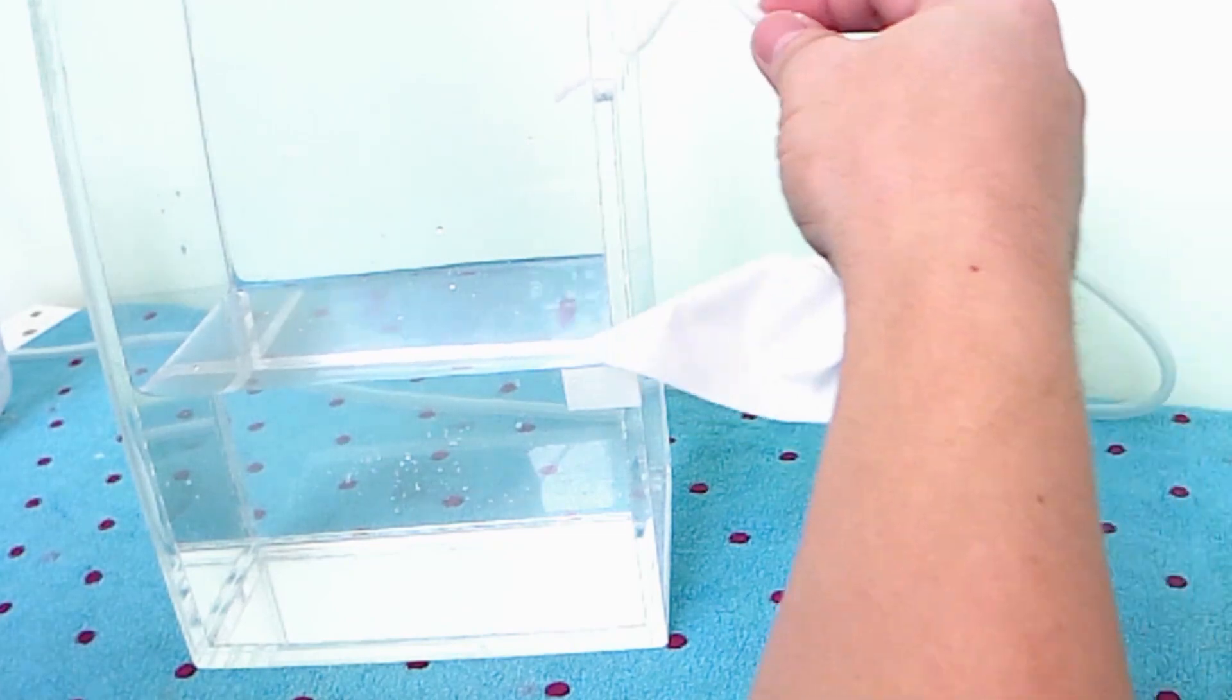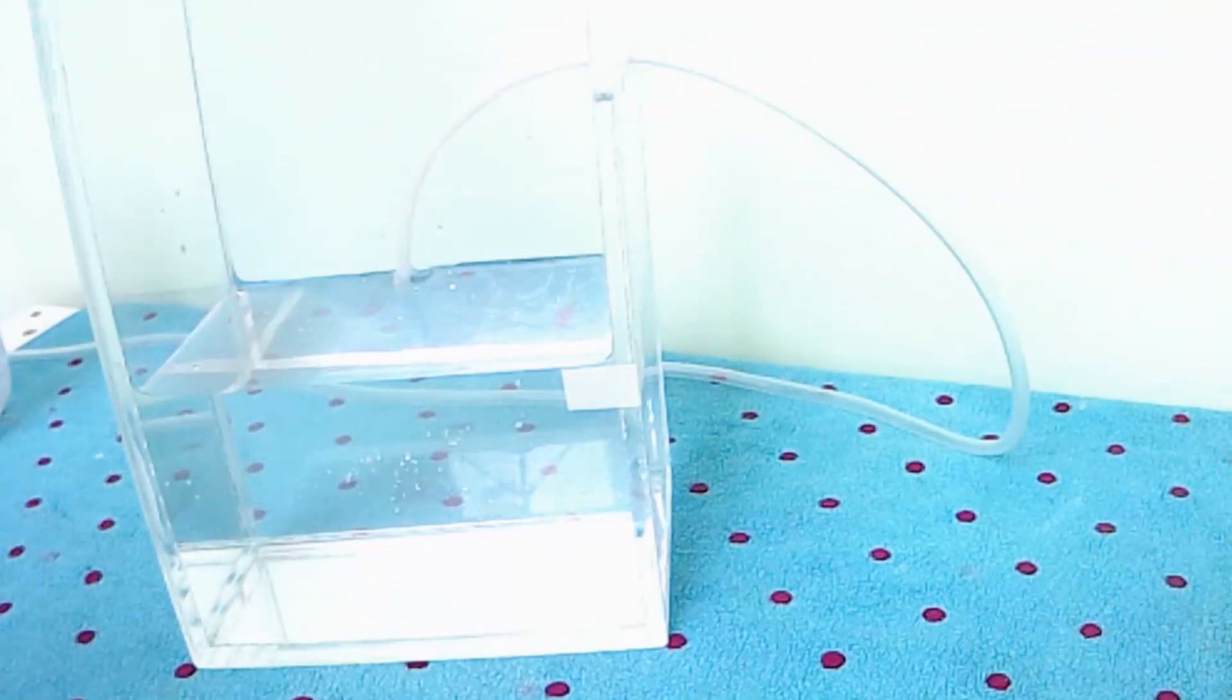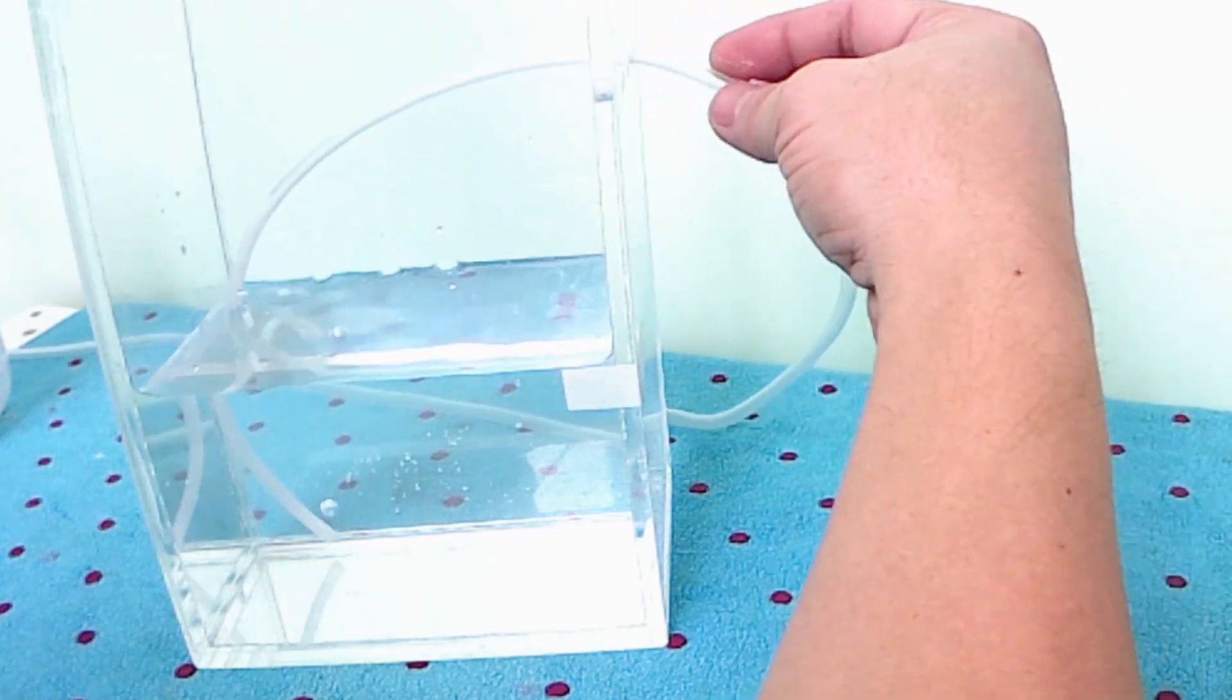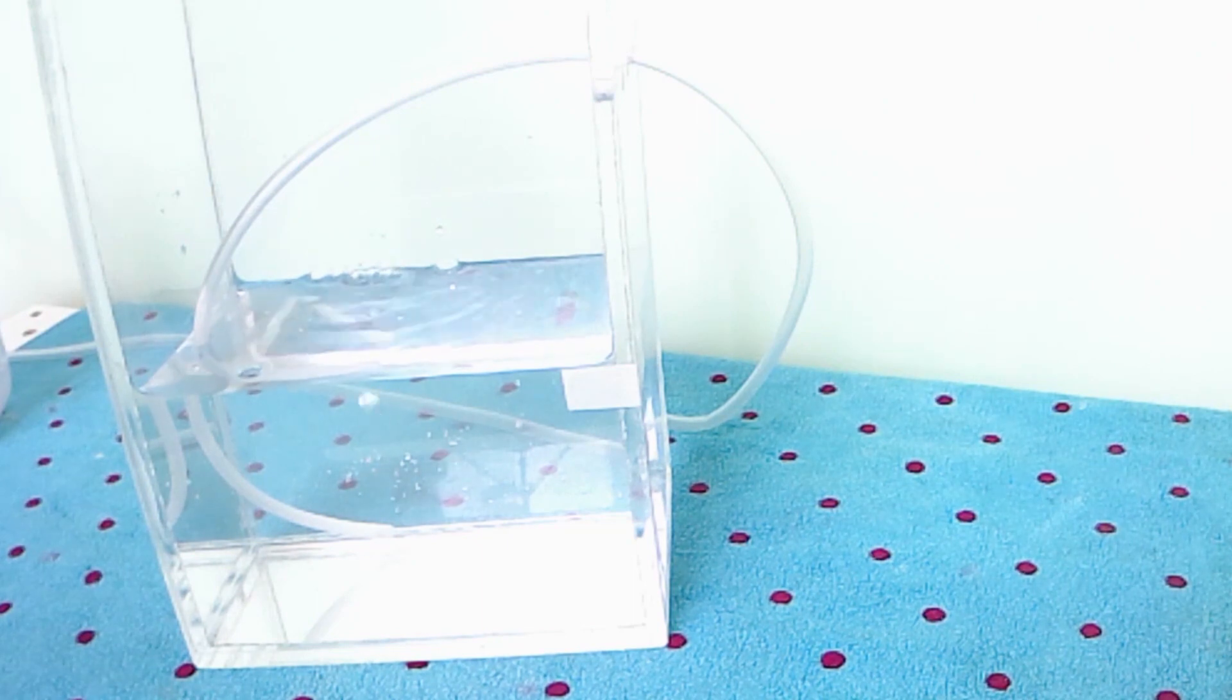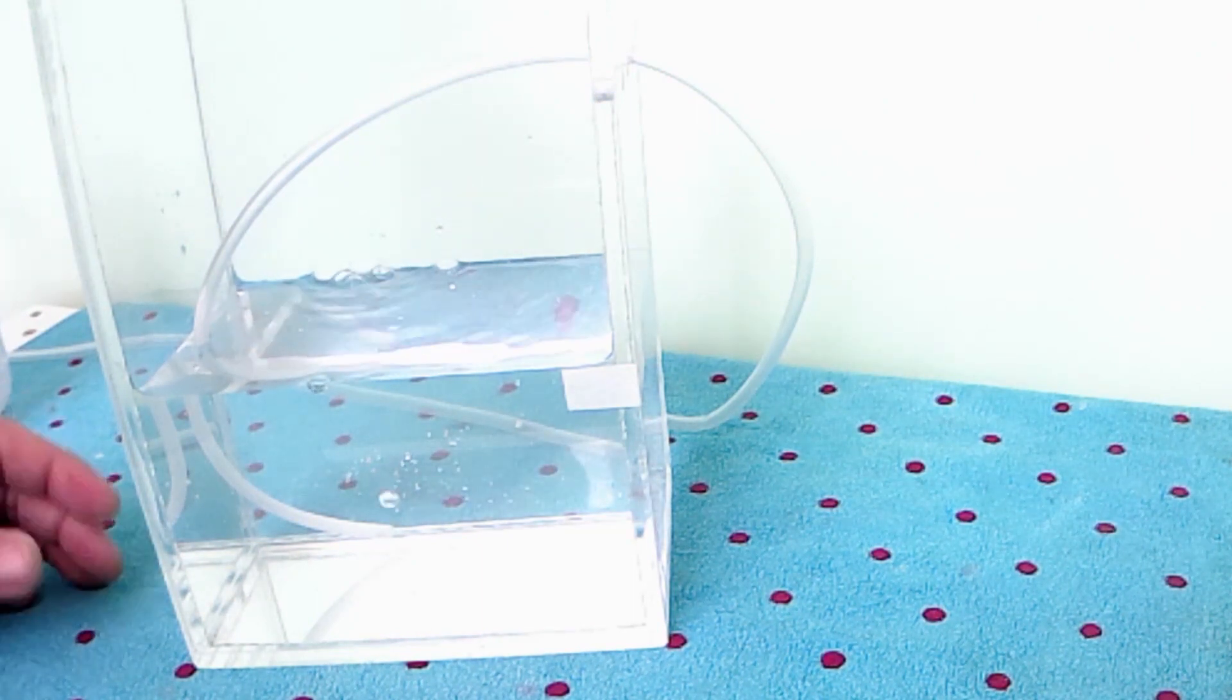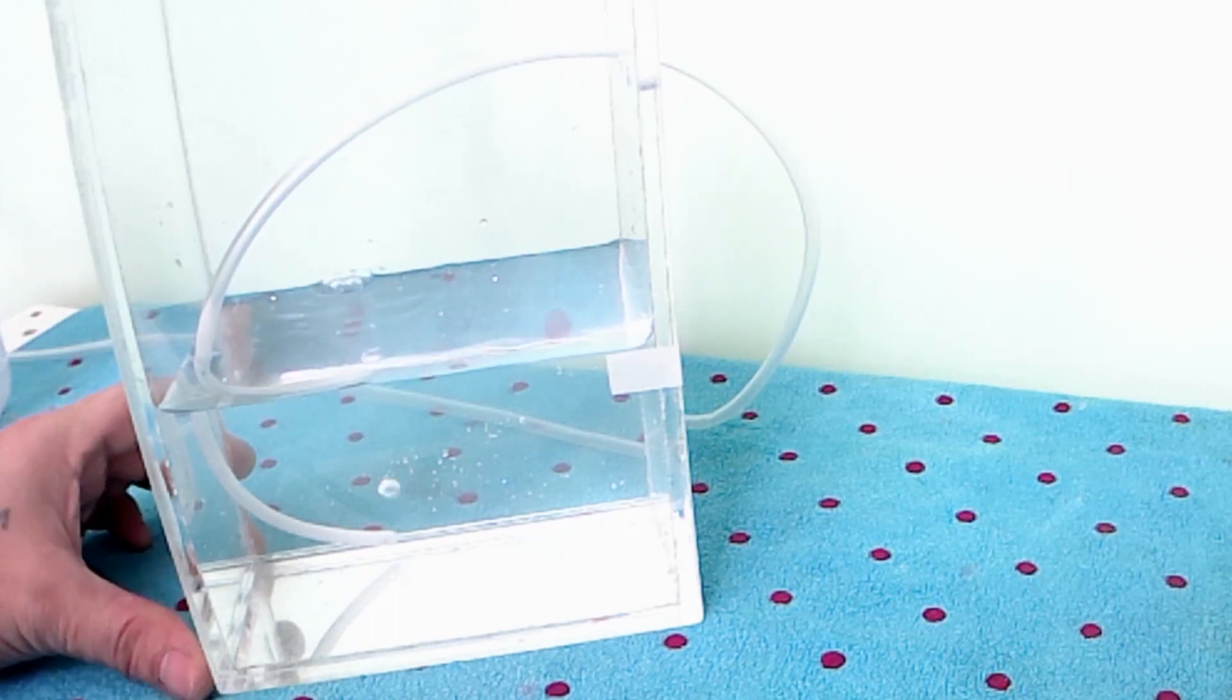We need a little bit of aeration. In my experience the eggs will hatch even without water circulation. We need circulation once we start feeding the baby brine shrimp. It will help distribute the food into the water column and help oxygenate the water as well.